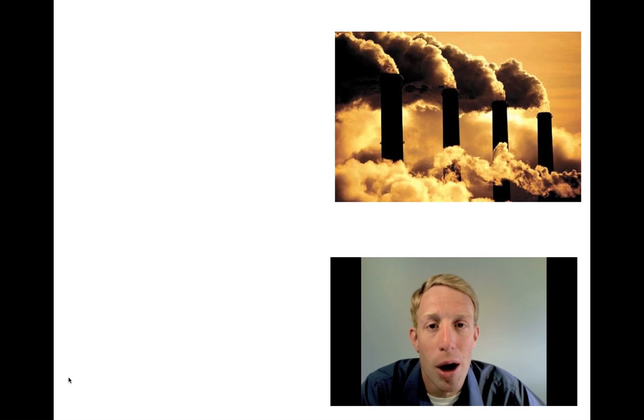The most common example of an externality is pollution. A factory is producing things to sell, and so there'll be some benefit that's created by the exchange of those goods between the factory owner and the buyer. But in the process of making these things, there might be some air pollution, water pollution, light pollution, some other kind of pollution that's generated that some other group of people has to pay for.